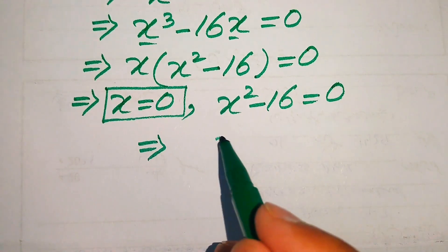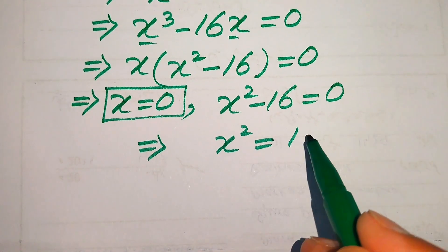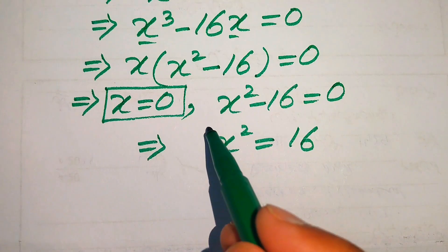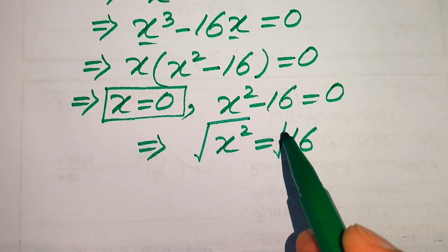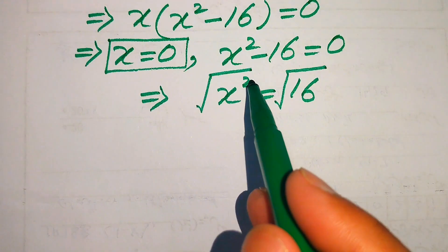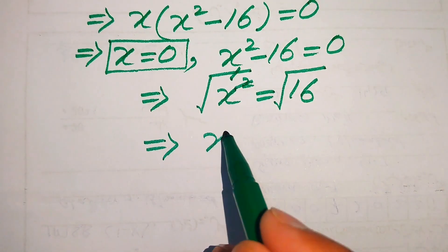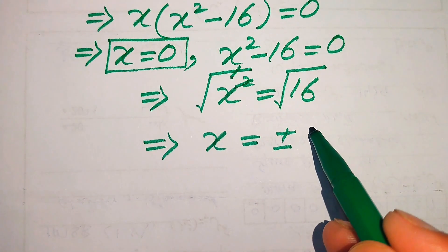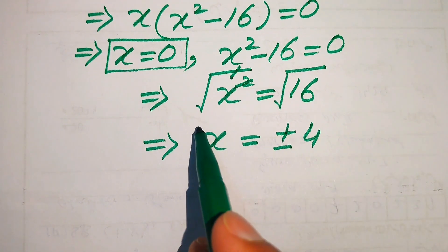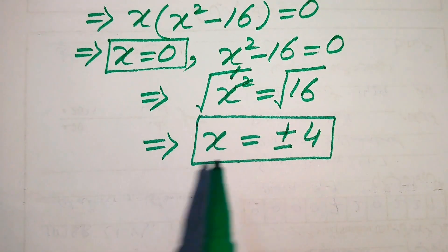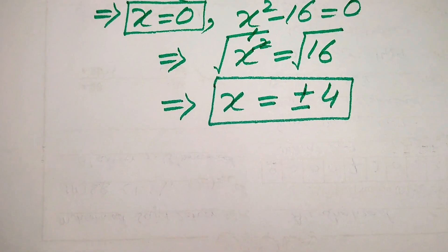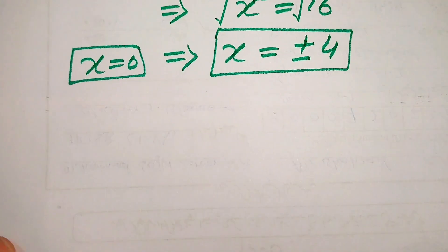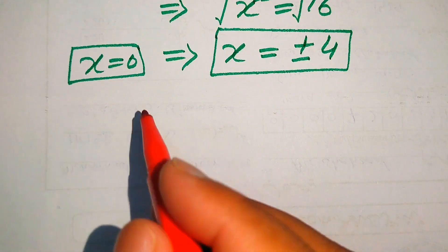To find the other roots, we solve x squared minus 16 equals 0. Moving 16 to the right-hand side gives x squared equals 16. Taking the square root of both sides, the square and square root cancel, and we get x equals plus or minus 4. So we have 3 roots of the given equation, and we now need to verify which are true solutions and which are extraneous.